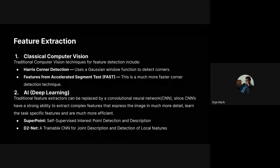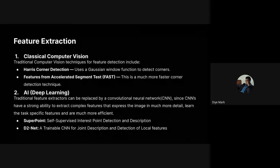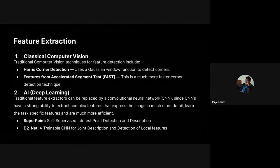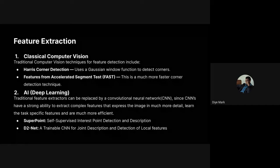There are two approaches to deep learning feature extraction. You can collect your own data, pre-process it, build and train models, then make predictions. Or you can use pre-trained models — models that have already been trained on large datasets, fine-tuned, and exported — which you can then apply directly to your own data.